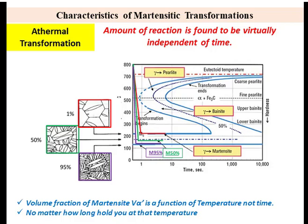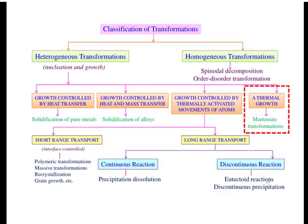In this course we have seen different classifications of transformations. There is athermal growth for martensitic transformations, but this is not completely true, because iron-nickel systems show isothermal martensitic transformations. We will discuss these exceptional cases in the iron-nickel system in the next lecture.